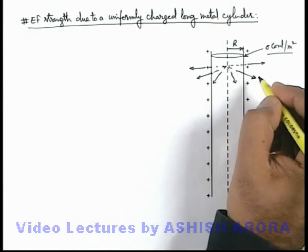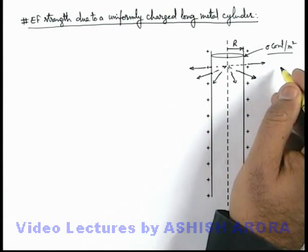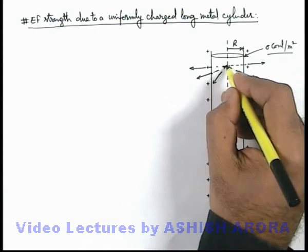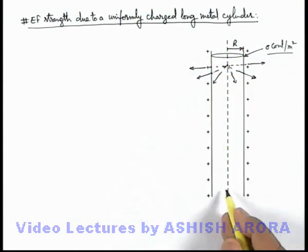So here we can say that the electric field in the outer region will be exactly having similar configuration which exists due to a uniformly charged long thread, as if it is kept on the axis of the cylinder.